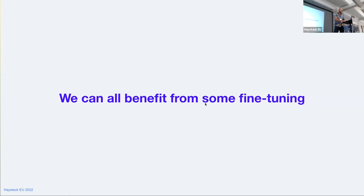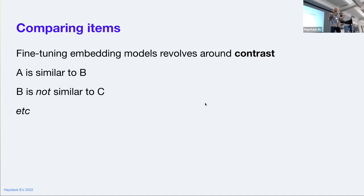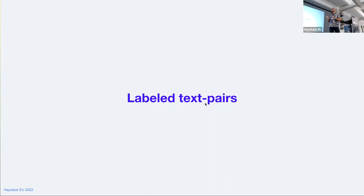This overview looks pretty complex, but the intention is that by the end of this talk, it's going to look much more approachable. We're going to cover all of this. Generally when fine-tuning these models, what we're really doing is trying to compare items — finding contrast between different items, whether that's text or images. We want to say A is similar to B, but not similar to C. Depending on your dataset, you're going to want to use a different approach to fine-tuning.